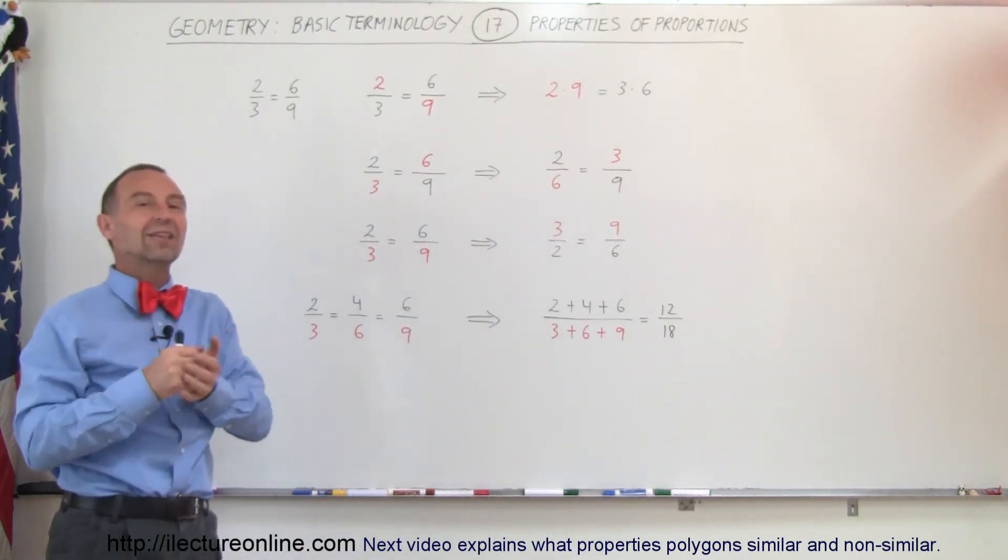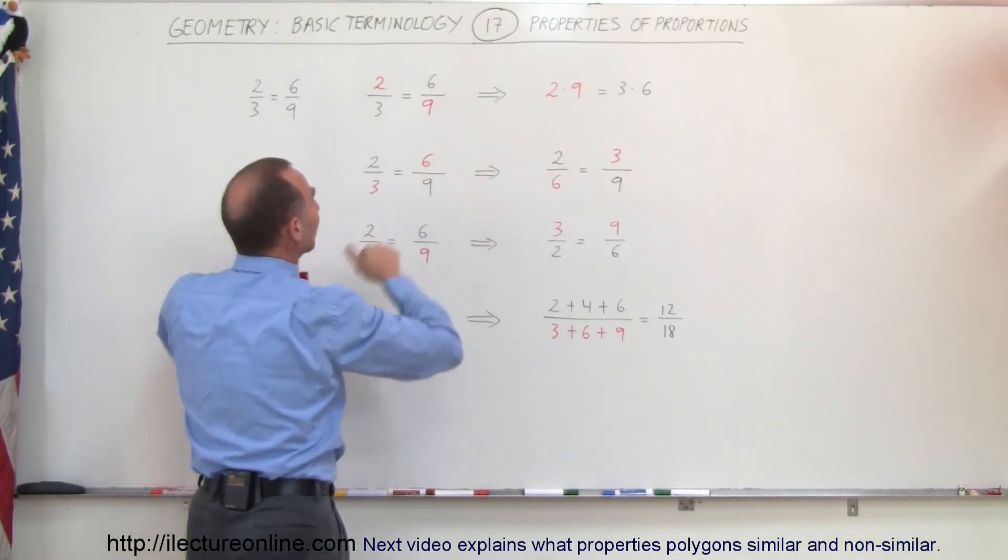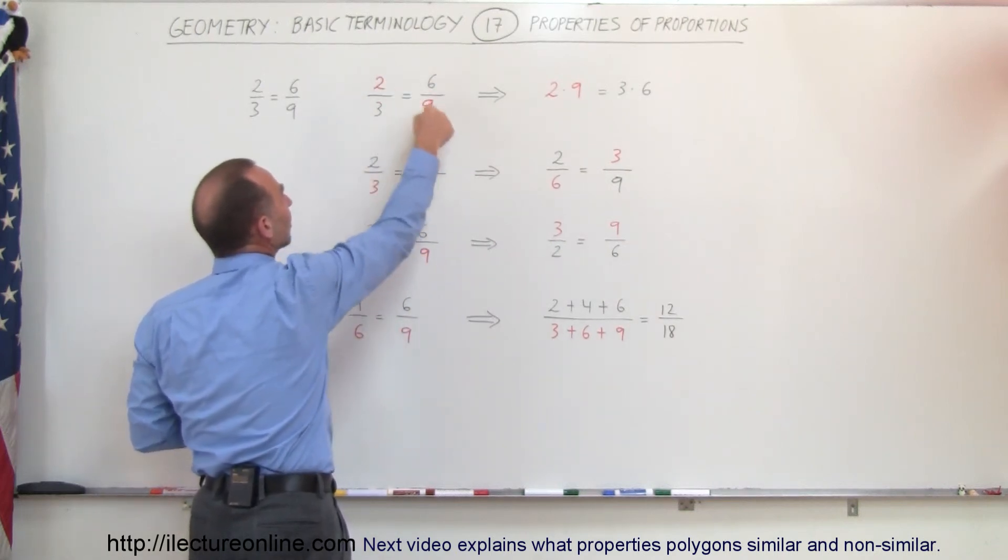So there are some very handy things that we can do with proportions. We can move things across the diagonal, we can take the inverse of the two fractions, or we can cross-multiply the diagonal members, so 2 times 9 and 3 times 6, and that is still equal to one another.